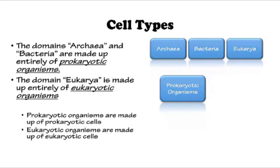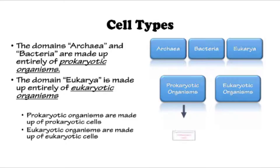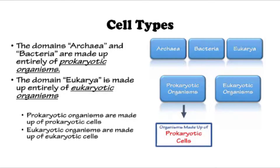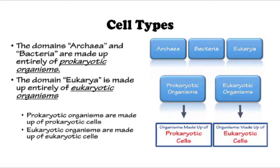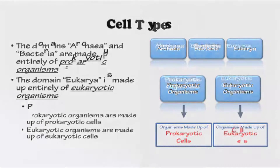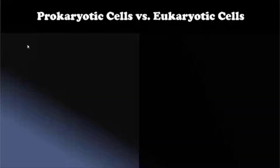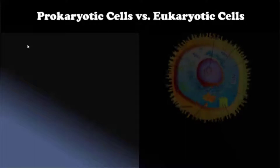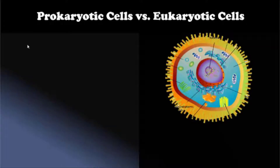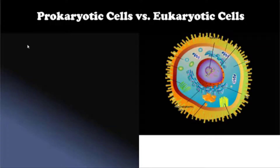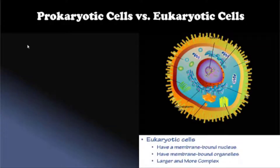The domain Eukarya is made up entirely of eukaryotic organisms. Prokaryotic organisms are made up of prokaryotic cells, whereas eukaryotic organisms are made up of eukaryotic cells. Eukaryotic cells have a membrane-bound nucleus and membrane-bound organelles.